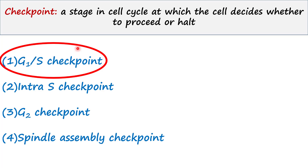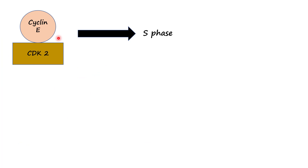This checkpoint acts on the transition from G1 to S phase and it checks whether any type of DNA damage is present or not before initiating DNA replication in S phase. The complex of Cyclin E and CDK2 is responsible to proceed into S phase. These two are proteins.